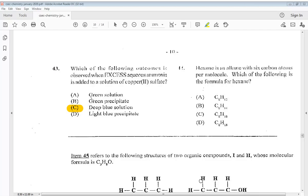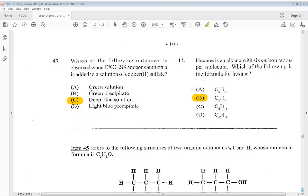Question 44. Hexane is an alkane with six carbon atoms per molecule. Which of the following is a formula for hexane? So it is B, C6H14.